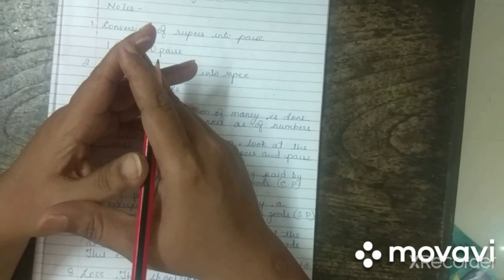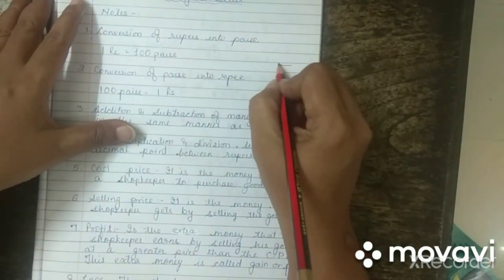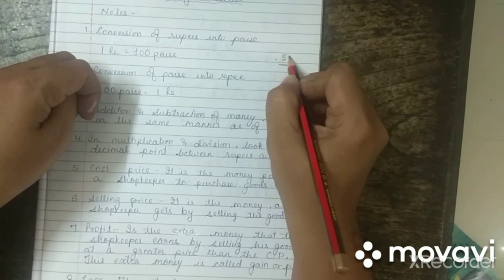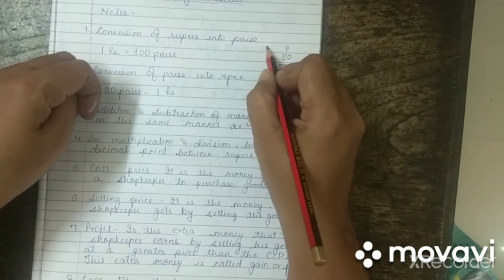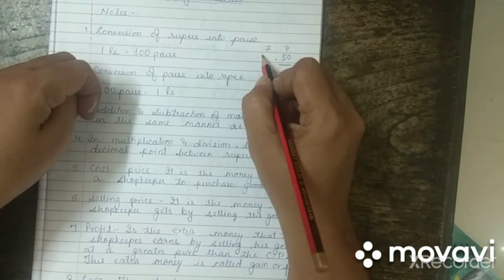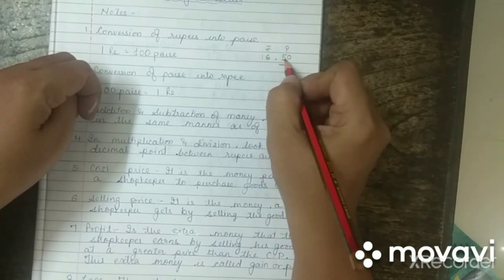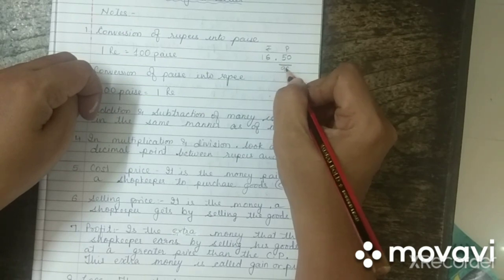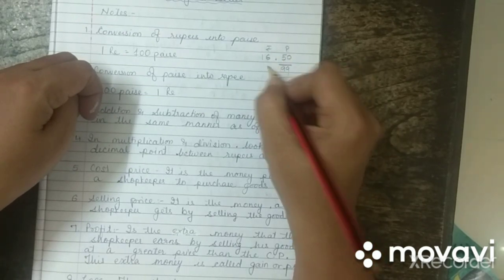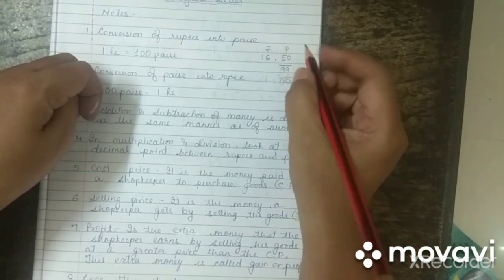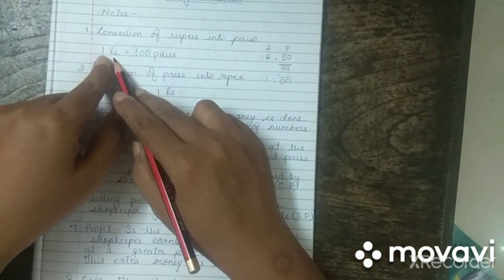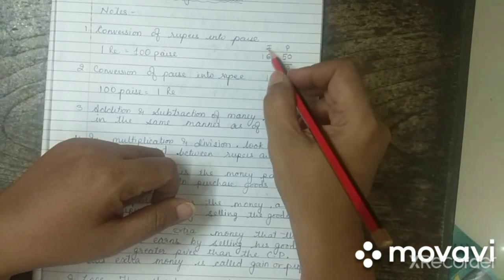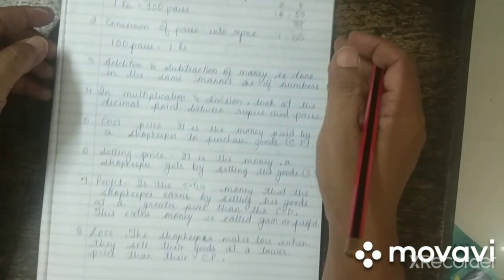In multiplication and division, you have to look at the decimal point. Whenever you write rupees and paisa, the last two digits after the decimal point represent paisa. For example, 16 rupees and 50 paisa — the 50 after the decimal are paisa and 16 are rupees. Once paisa reaches 99, you add one more paisa and it becomes 100, which equals one rupee.